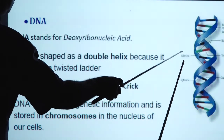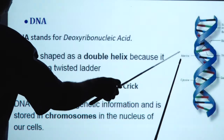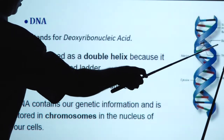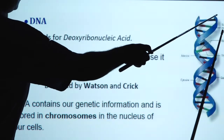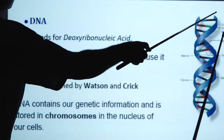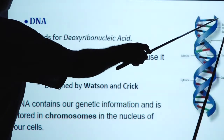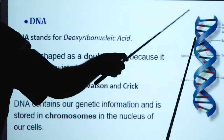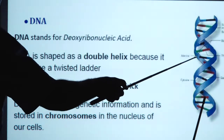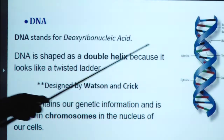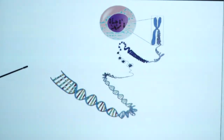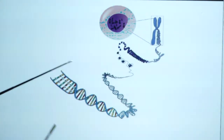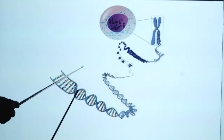We can see the nitrogenous bases — adenine, cytosine, guanine, thymine — in the DNA structure. These are the sugar-phosphate backbone, by which both strands are connected to each other.